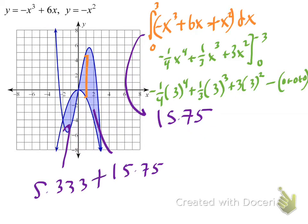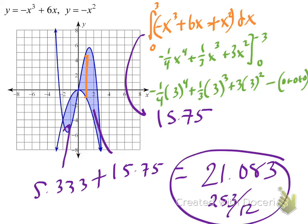The total area is simply the sum of these two: 5⅓ + 15¾ equals 21.08, or if you prefer rational numbers, that's 253/12. Hope this helps.